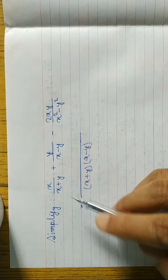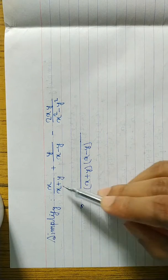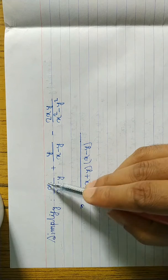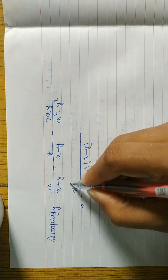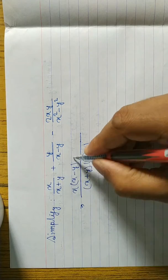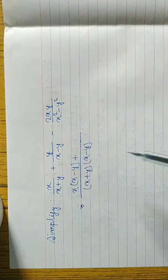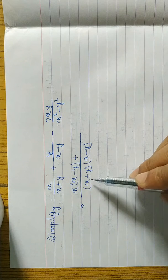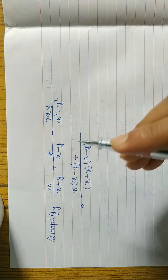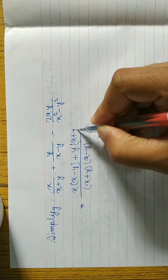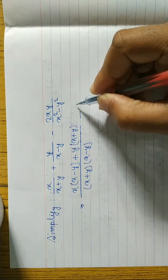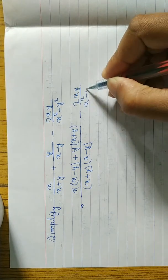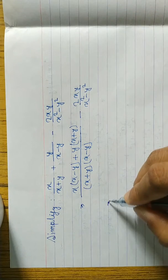We divide the denominator: x plus y and x plus y cancel, leaving x minus y multiplied by x, so we write x(x minus y). There is a plus, so we write plus. Then we divide x minus y: x minus y cancels, leaving x plus y multiplied by y, so we write y(x plus y). The last term, minus 2xy, is copied as-is.